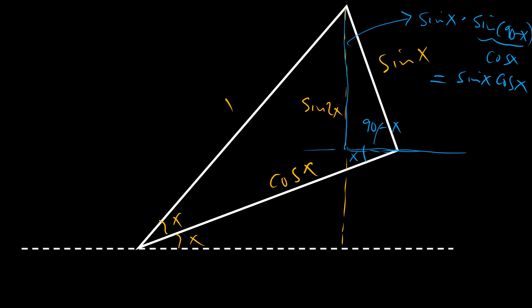And then, if we look at this height here, from here to here, since this is cosine x here and this base angle is x, then this height here is going to be cosine x times sine x.